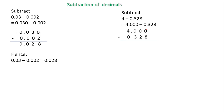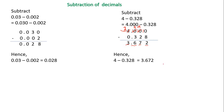Now I do the subtraction from thousands place to ones place. Zero — I have to borrow. In hundreds also zero, can't borrow. In tens also zero, can't borrow. I borrow from ones: four becomes three, and zero becomes ten. I borrow one from that ten — it becomes nine, the next zero becomes ten. I borrow again — that ten becomes nine and the last digit becomes ten. Ten minus eight is two, nine minus two is seven, nine minus three is six, decimal point, three minus zero is three. The final answer is 3.672. This is how we do subtraction of unlike decimals.